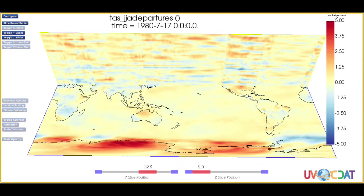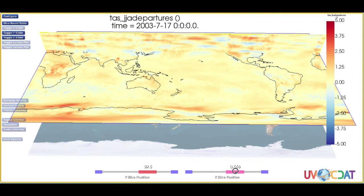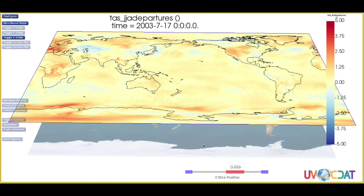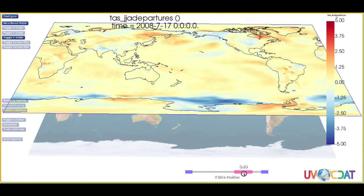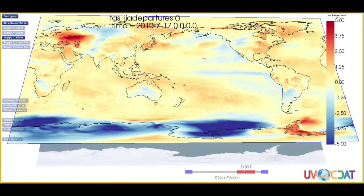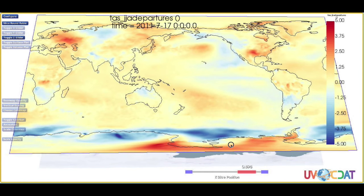Now, if we move the Z-plane slider up to coincide with the deep red colors, we can see when the heat wave occurred. For instance, in 1980, we see a heat wave in the mid-western U.S. Later, we see the more recent 2003 European heat wave. Then the fierce 2010 Russian heat wave, and finally the 2011 Texas heat wave.